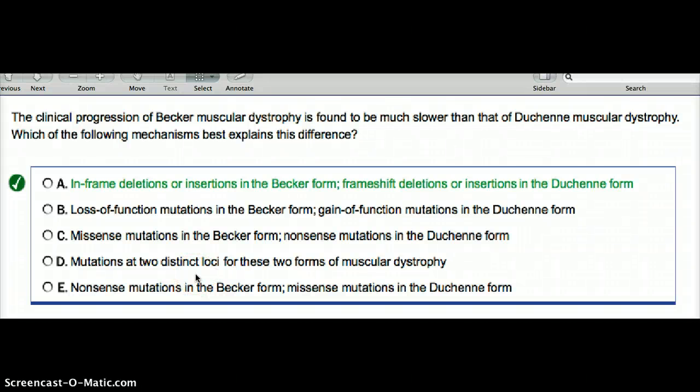In this question, it says the clinical progression of Becker muscular dystrophy is found to be much slower than Duchenne muscular dystrophy. Which of the following mechanisms best explains this difference?